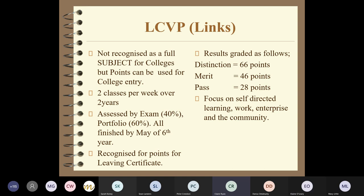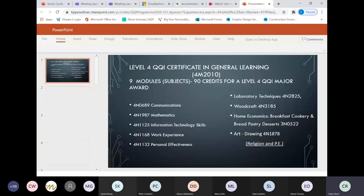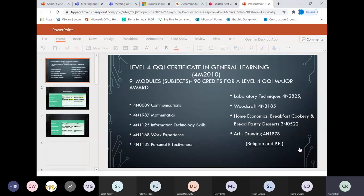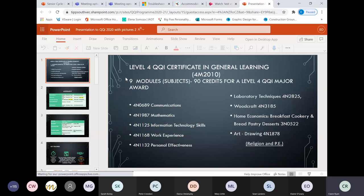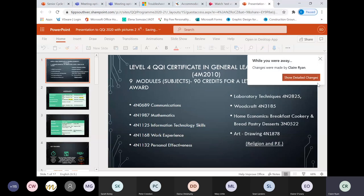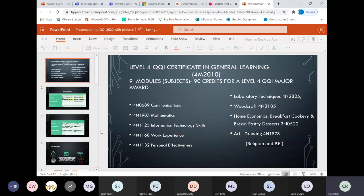For those of you who are struggling with the junior cert and find the jump up to leaving cert might be too much of a transition, the level four is an in-between step - a smaller step to take. You don't sit traditional subjects; what we call them are modules. To get a major award, you need 90 credits. We have nine subjects within the school including communications, maths, IT, work experience, a lab science subject, make subjects and art.